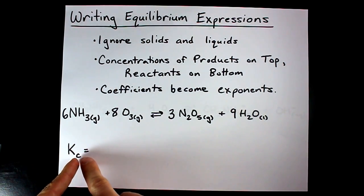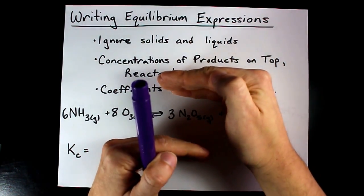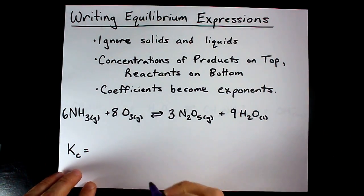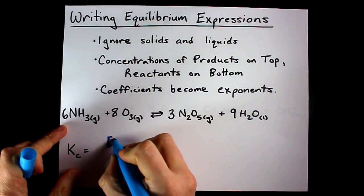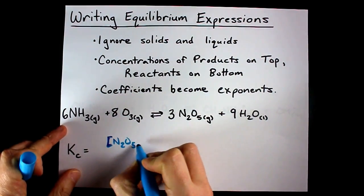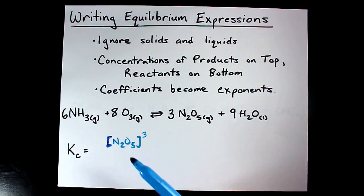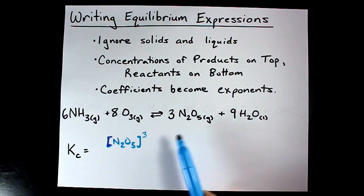Now to create the Kc or Keq for this reaction, products over reactants, coefficients become exponents. Products include N2O5 and it was a gas so it does not get ignored with a power of three on it because there's a three as a coefficient. The water will get ignored in the equilibrium expression because it is a pure liquid.